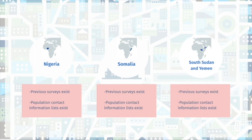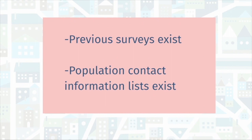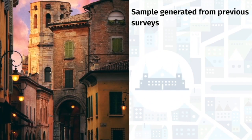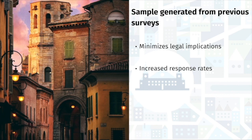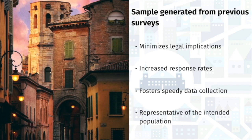Nigeria presented the perfect situation to adapt from in-person to mobile phone surveys. They had already conducted a nationally representative survey that included phone numbers and consent from survey respondents. There are many advantages of using a sample from a previous survey. It helps minimize legal implications, because some countries do not allow large numbers of unsolicited phone calls. It also leads to increased response rates and overall data collection because you've already established rapport with your respondents — 80% of interviews in Nigeria were successful. It's also fast because it cuts out complications from negotiating with phone providers and reduces the cost of sending bulk SMSs. Finally, it allows for comparability with data collected in the first survey to increase the representativeness of the intended population and ensure overall higher quality data.